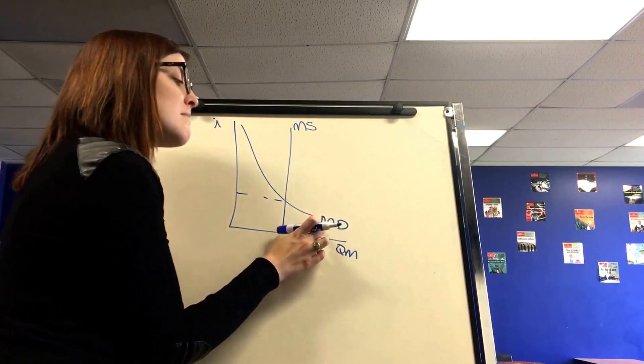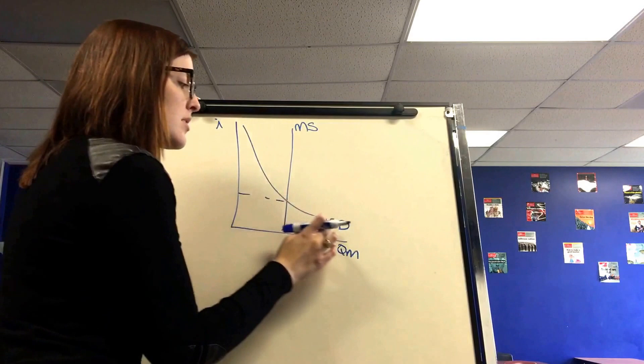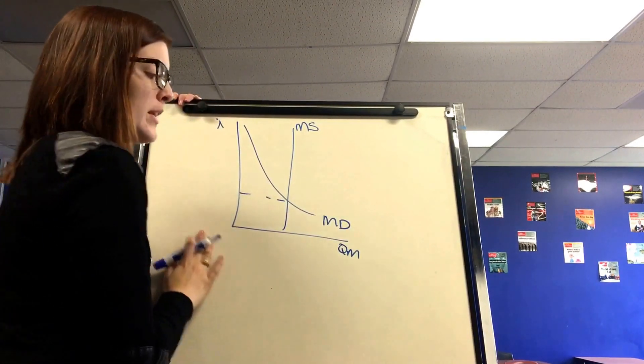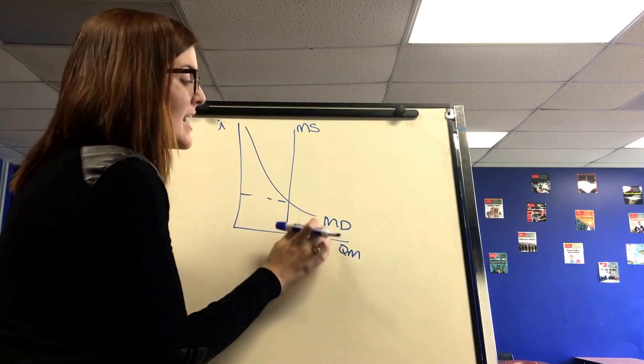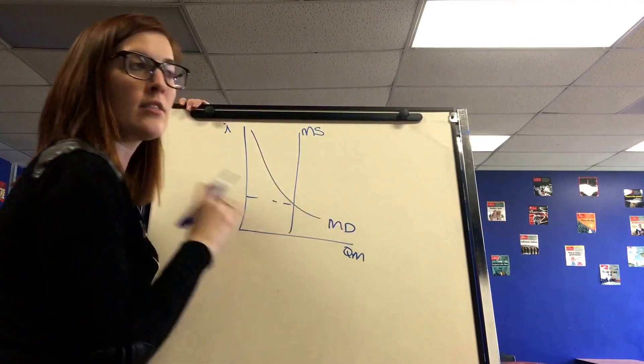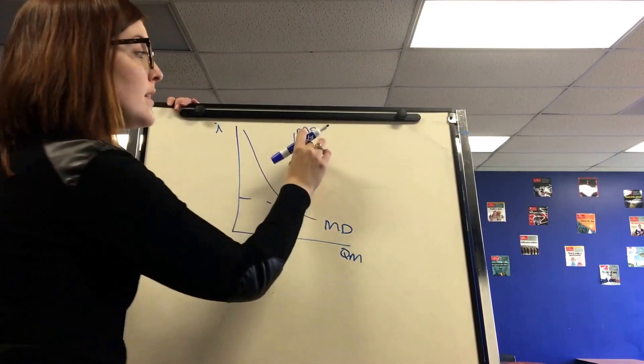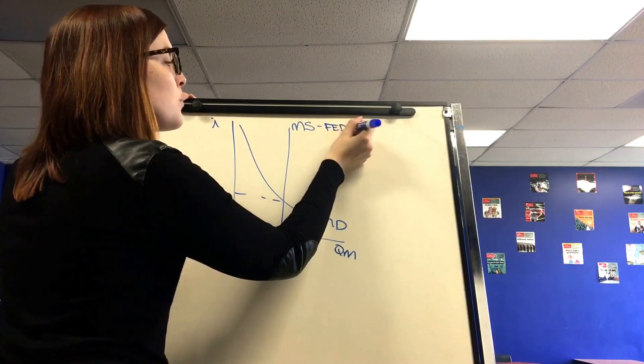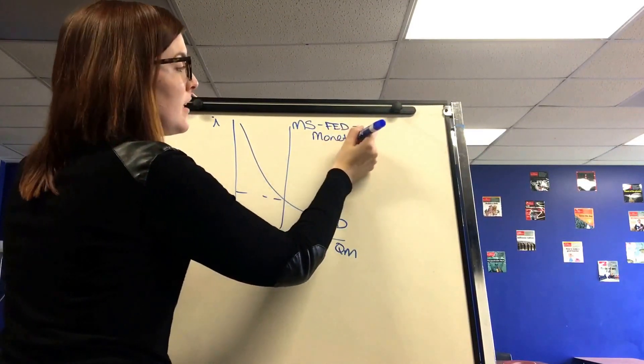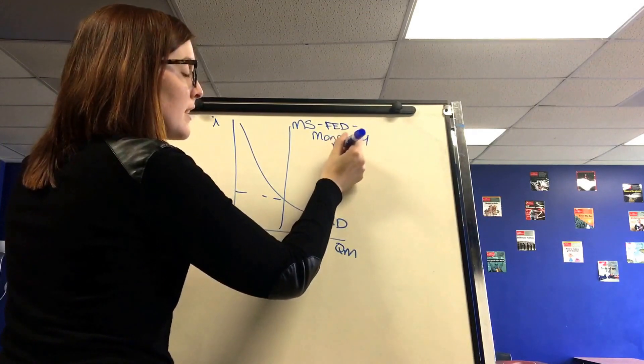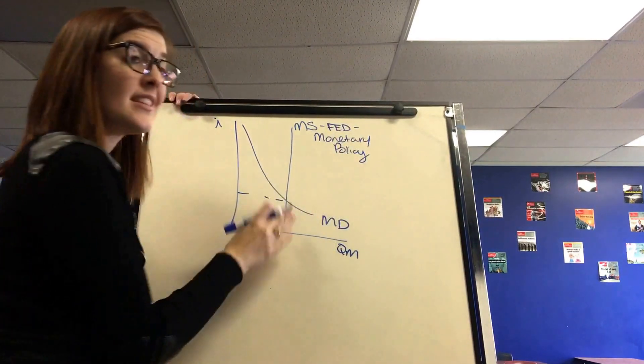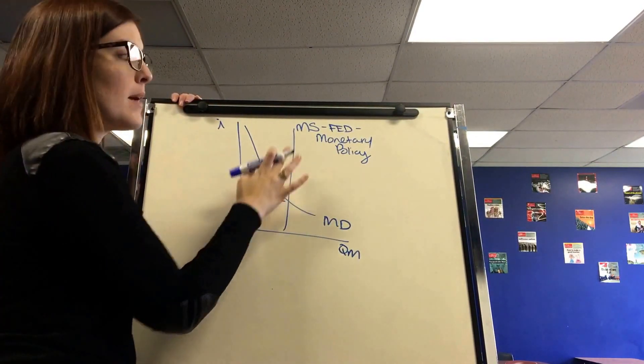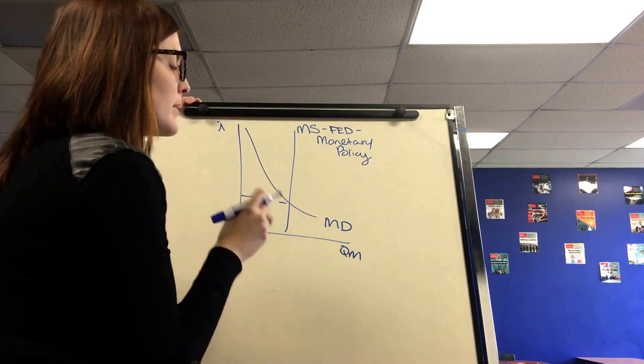The money demand line is downward sloping to show the inverse relationship between interest rates and the quantity of money. And this is moved by anyone else other than the Federal Reserve because only the Federal Reserve can move this. So the Federal Reserve moves the money supply line, which also means all monetary policy moves the money supply line. So all of those tools I just listed will move this line. Buying bonds, lowering the reserve requirement.